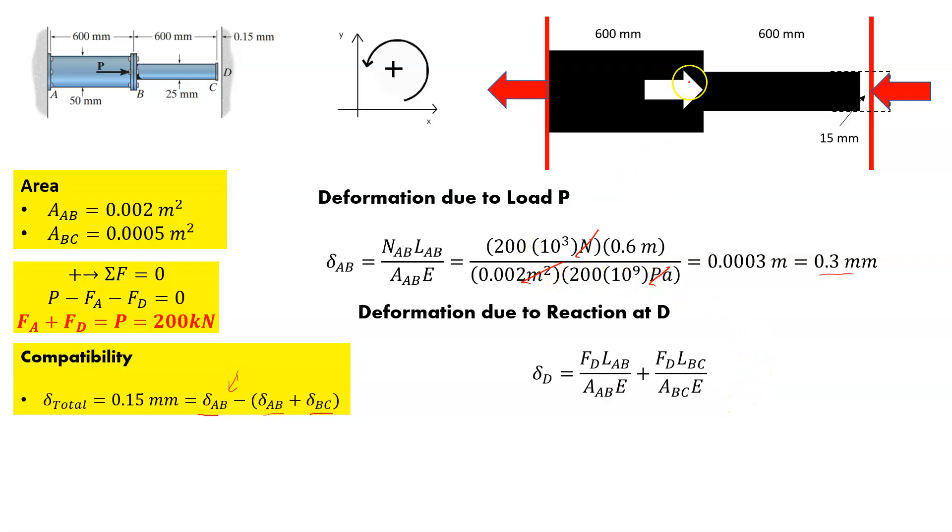So we've got a reaction due to the load that only gets applied to AB and a reaction due to the load at the wall that applies to both AB and BC. So we plug in our numbers and we still don't know what that reaction is. So we just represent it as F_D. So we've got the length, the cross-sectional area, 0.002 meters squared and 200 gigapascals, which is our Young's modulus. And for BC, again, the same length, a different cross-sectional area, 0.0005 meters squared, same Young's modulus.